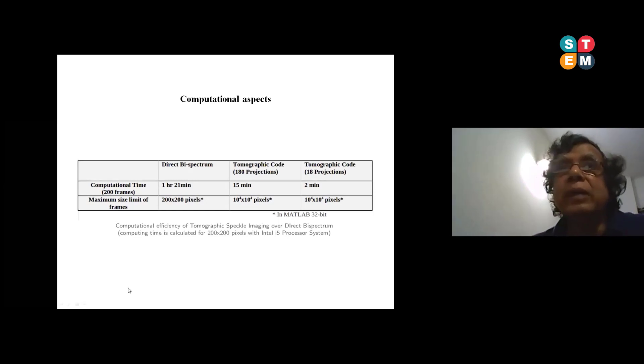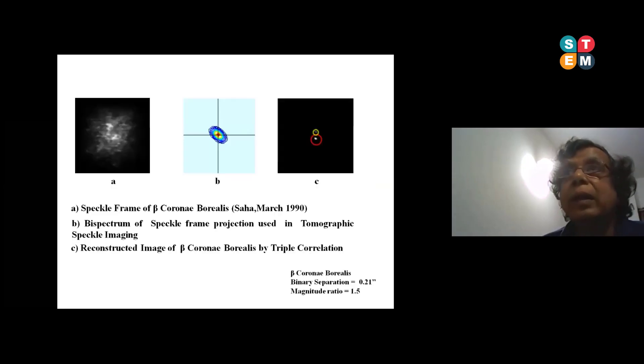We found out, we have done both direct bi-spectrum as well as tomographic code. We found out that tomographic code is much faster. 200 frames: for direct it used to take one hour 21 minutes, and tomographic code it used to take 15 minutes. If you give 18 projections it used to take two minutes. Maximum size: direct 200 by 200 pixels, whereas tomography you can do 10^4 by 10^4 pixels.